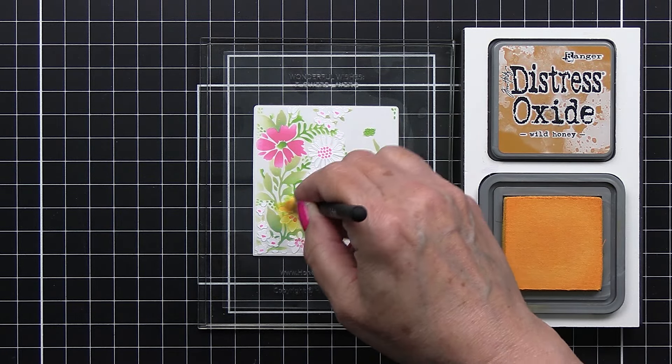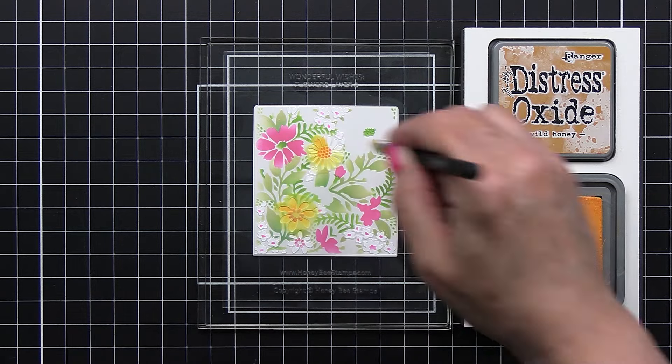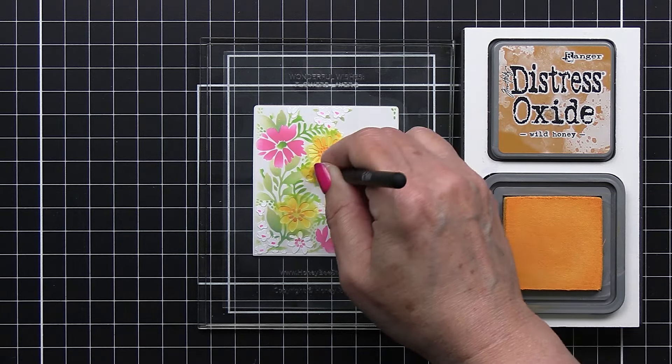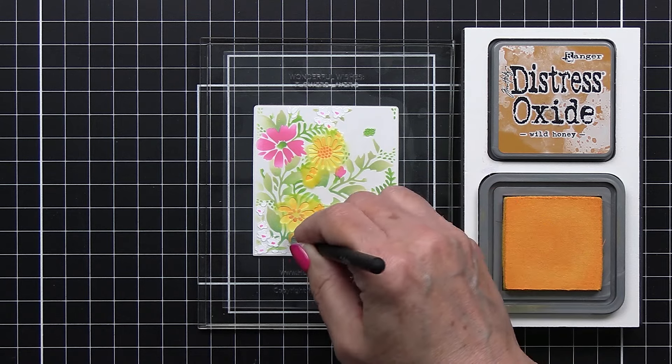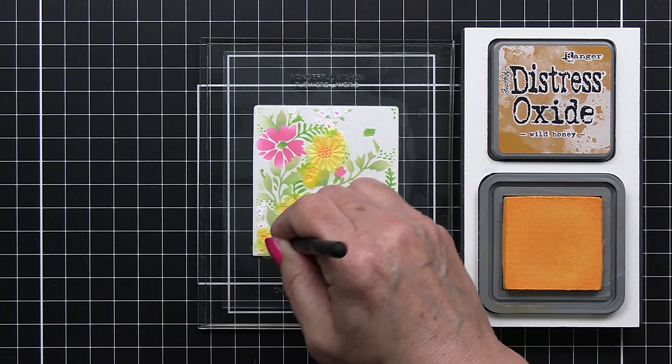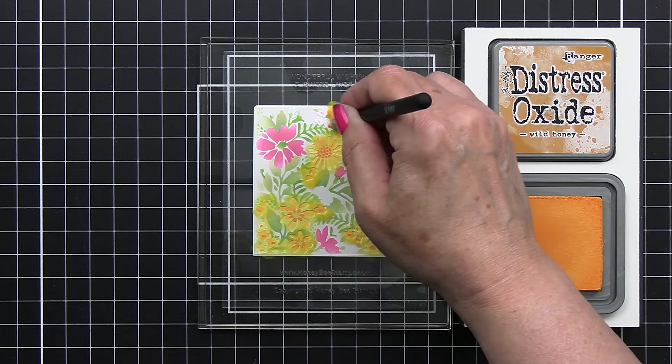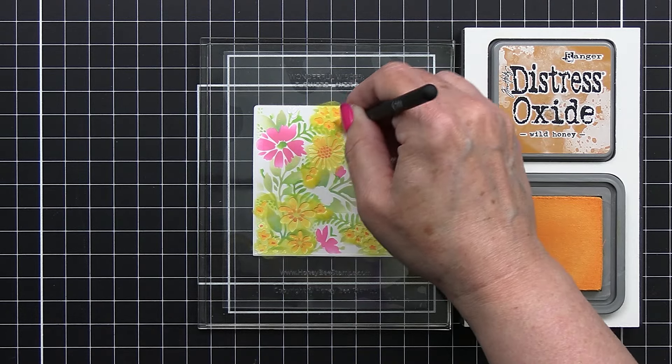Now this one is Wild Honey Oxide and I just really love the combination of kind of an orangey yellow with pink and of course that looks really pretty with green, so it's a really great color combo and I'm just adding some of this orangey yellow into this second stencil for the florals.